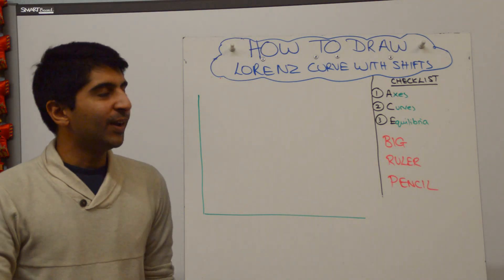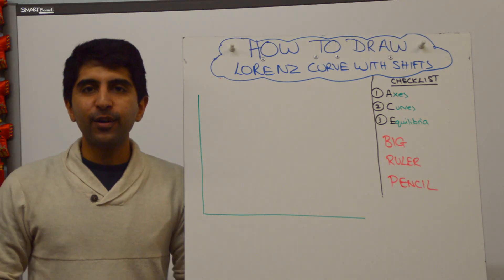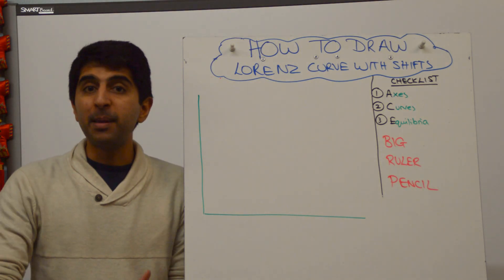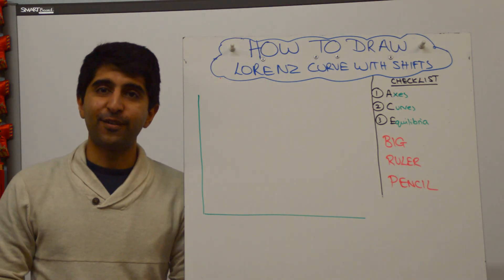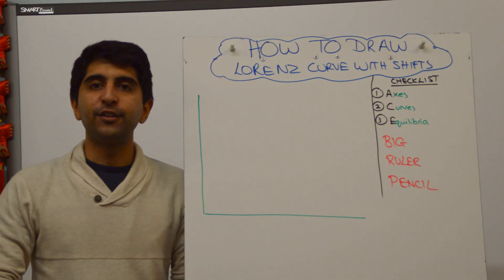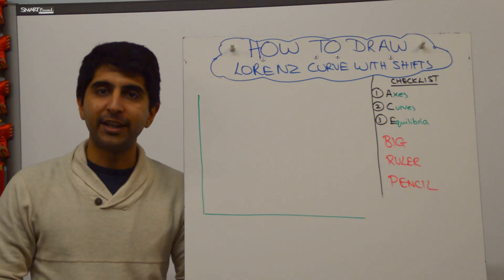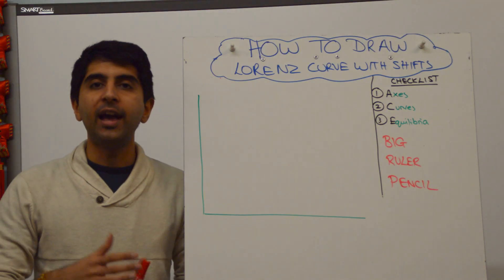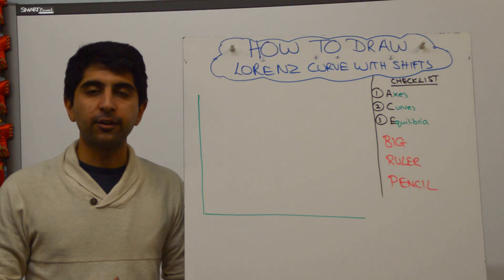Hi everybody! You need to draw a Lorenz curve and maybe even shift the Lorenz curve to show changes in income inequality. How do you do that?